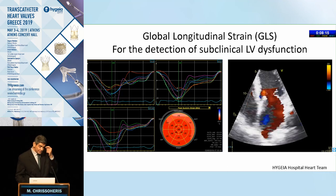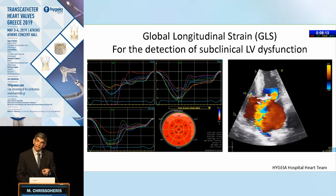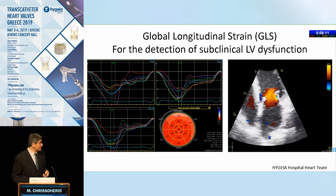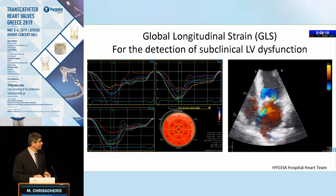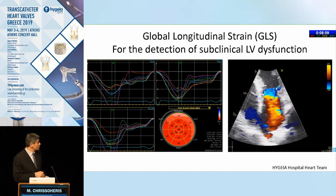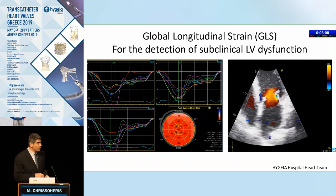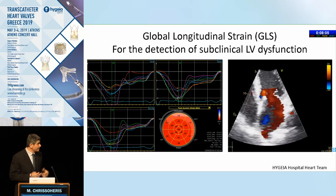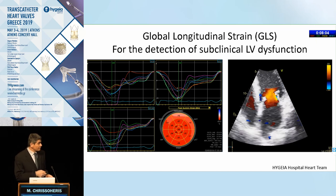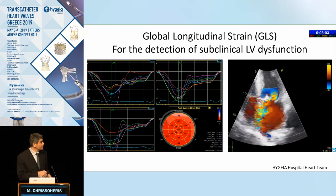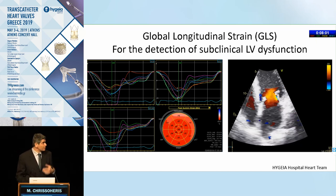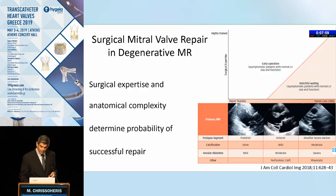Another index we could use to screen for subclinical LV dysfunction is global longitudinal strain of the left ventricle. This may serve as a marker in a patient with severe MR and normal LV function to identify whether subclinical LV dysfunction is present.